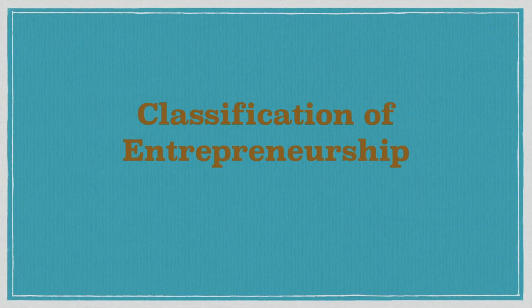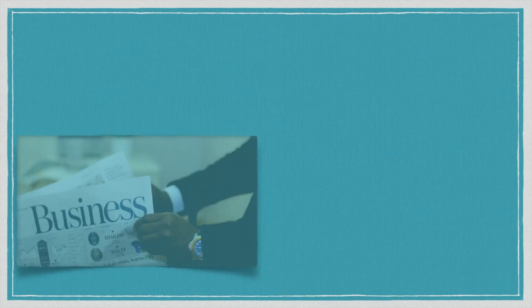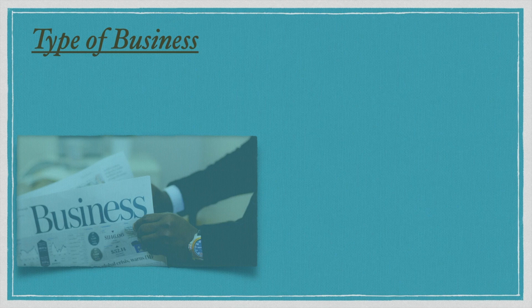The next part is classification of entrepreneurs. There are many different classifications; I'll cover the major ones. Classification according to the type of business you do. Under this, there are retail entrepreneurs, where you sell products by having a retail shop or an e-retail website like Flipkart, Amazon, eBay, India Mart, and all such kind of things.